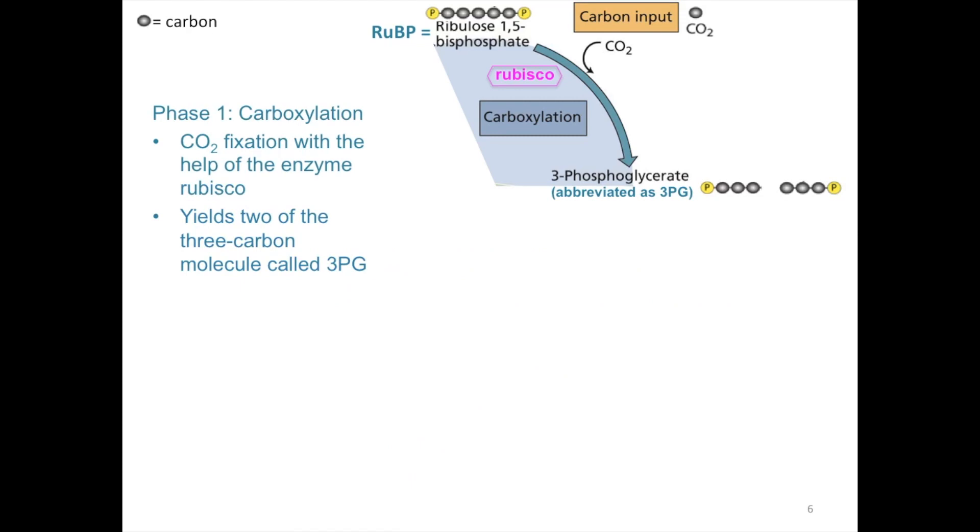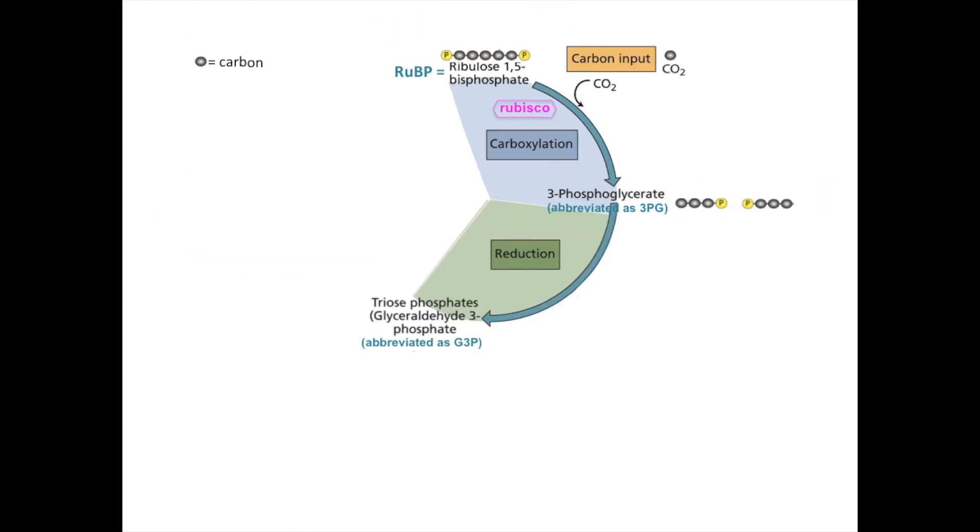So let's move on from the carboxylation phase. Just to recall that we have two 3PGs right here, and these two 3PGs will move on to the second phase of the Calvin cycle. So each of the 3PGs that were created from the carboxylation phase move on to the reduction phase. This is where we first see the products of the light reactions come into play.